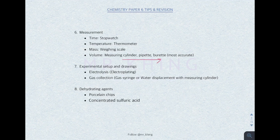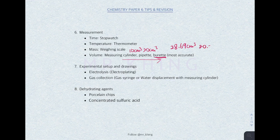When to use a measuring cylinder? It is used when you are measuring volumes of liquid with no decimal, like 10 cm³ or 20 cm³ — it's fast and easy. If you want a more specific volume like 28.69 cm³ or 20.20 cm³ — whenever it comes with a decimal, we use burette, the most accurate tool.